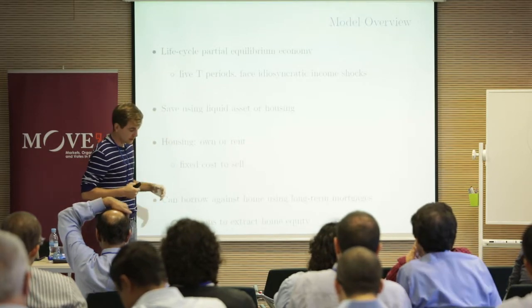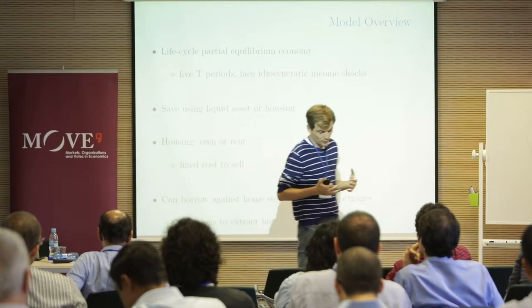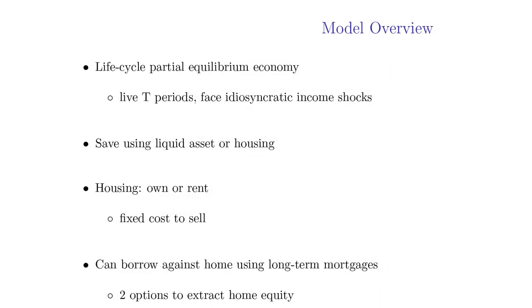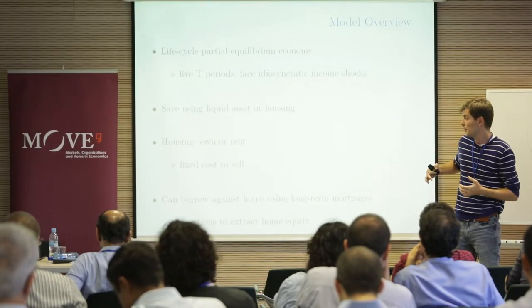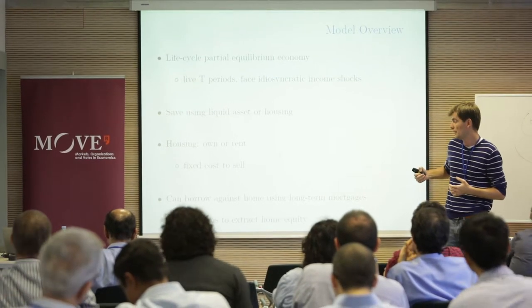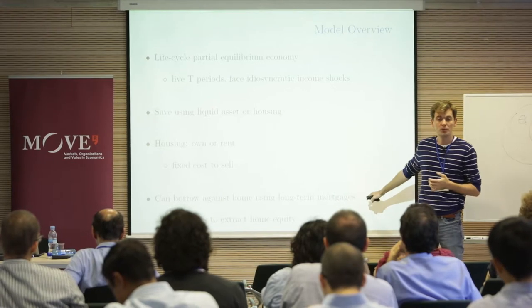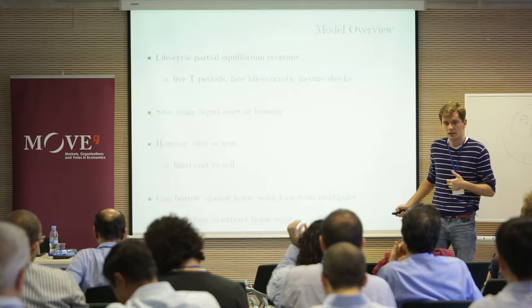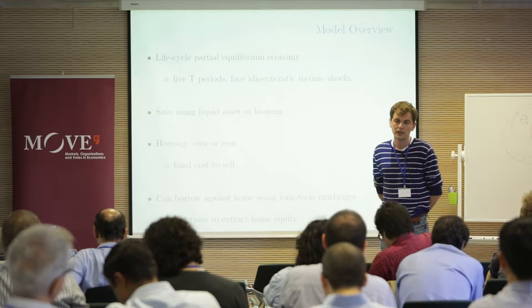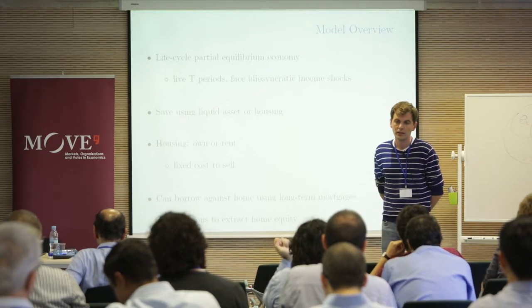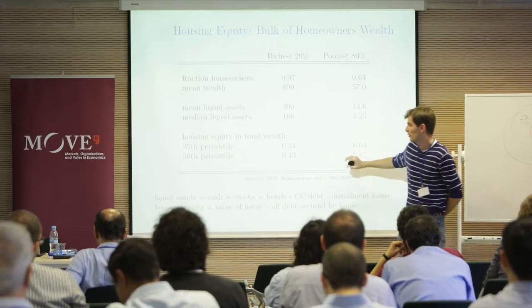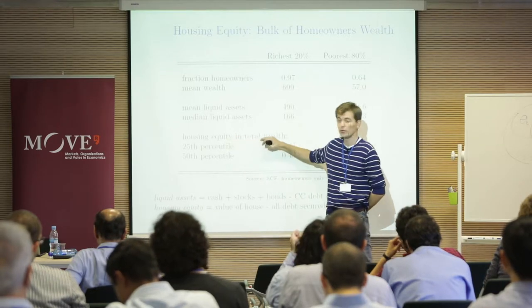In terms of the model, we have a life-cycle partial equilibrium economy. People are born with certain abilities, live for a fixed number of periods, and face idiosyncratic income shocks. They save using liquid assets and housing, can own or rent, face a fixed cost of selling their house, and are able to borrow against the home using the two options mentioned earlier. The median homeowner has about 87% of total wealth in housing, yet extractions happen only about every eighth year.